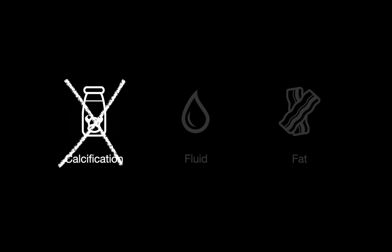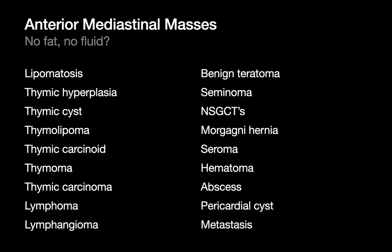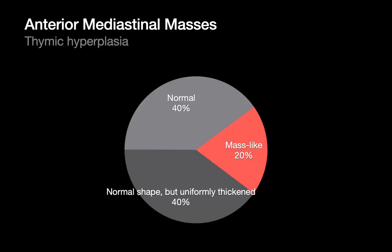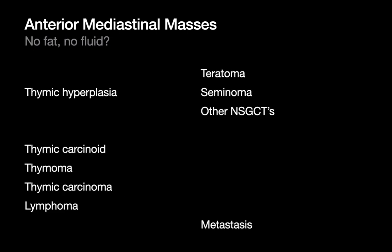Sometimes we'll encounter anterior mediastinal masses that contain no fat whatsoever and no fluid whatsoever. Any of the disorders remaining on our list could potentially present this way. One of these disorders may look kind of funny on the list — that's thymic hyperplasia. Although 40% of cases present as a normal-looking thymus and another 40% look like a thickened thymus (13 mm is usually the threshold used), one out of every five cases of thymic hyperplasia can sometimes present as a mass that may even resemble a thymoma.